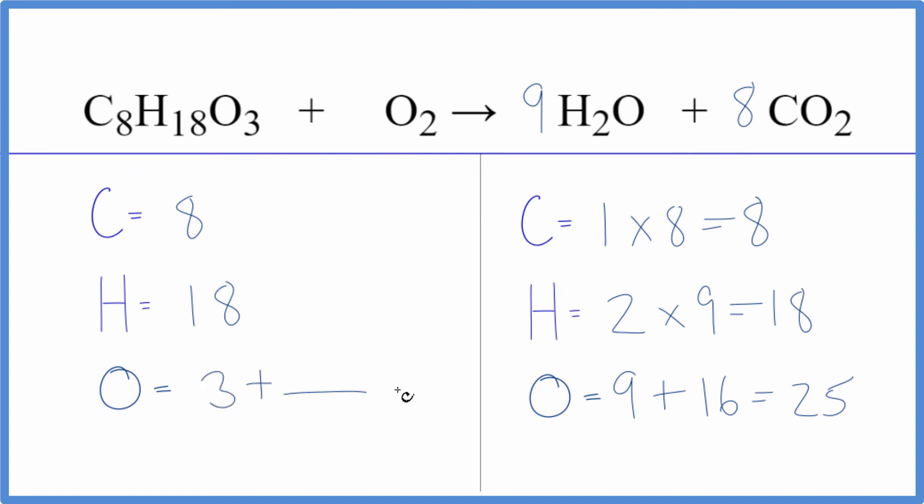3 plus 22, that gives us 25. So if I put an 11 right here, that would work. So I have the 3 plus 2 times 11, 22. So that gives me my 25 oxygens. I have 25 here.